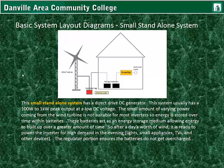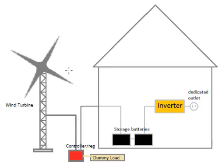Here we get to the basic system diagrams. Here is an example of a small standalone system. This small standalone system has a direct drive DC generator. This system usually has a 100 watt to 1 kilowatt maximum output at a low DC voltage. The small amount of varying power coming from the wind turbine is not suitable for most inverters, so energy is stored over time within batteries. These batteries act as an energy storage medium, allowing energy to build up over time. So after a day's worth of wind, it is ready to power the inverters for high demand in the evening for lights, small appliances, TVs, and other devices. The regulator portion ensures the batteries do not get overcharged. The flow is: DC generator, controller/regulator circuit, storage batteries, inverter, and a dedicated outlet or connection.